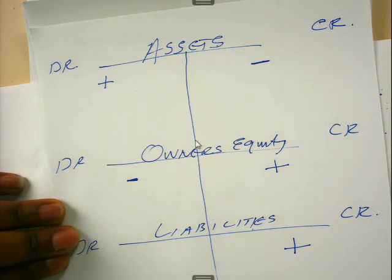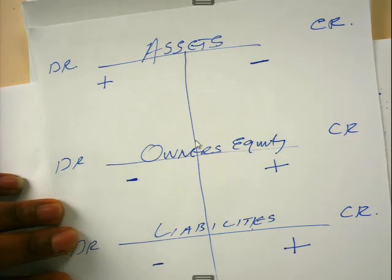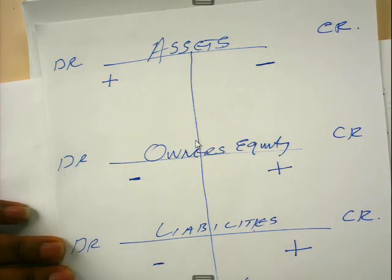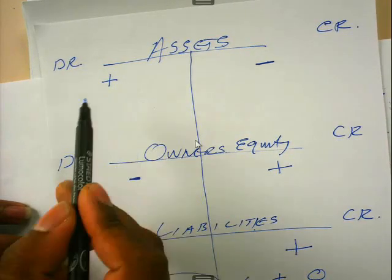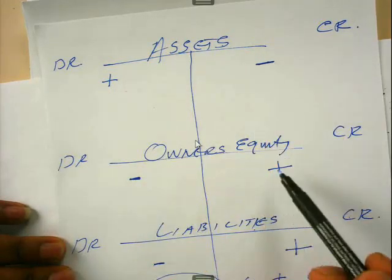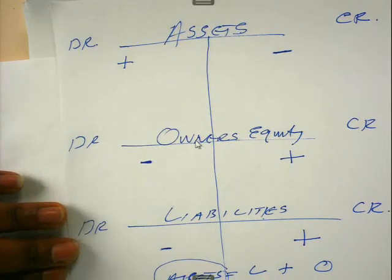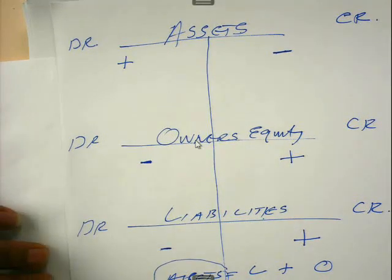Liabilities increase on the credit side. That is why the accounting equation is: assets equals liabilities plus owner's equity. You will see assets increase on the debit side and decrease on the credit side, whereas the other two both increase on the credit side and decrease on the debit side. These are the rules that we are going to apply consistently throughout this presentation.